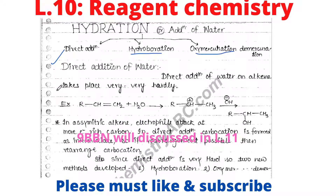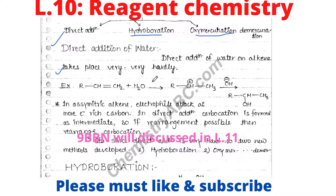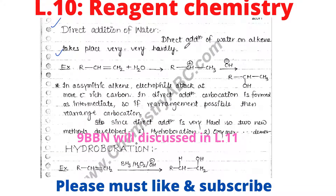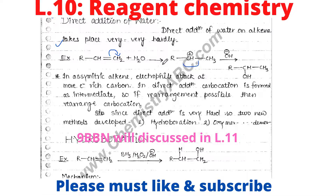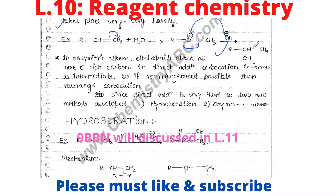Direct addition of water to an alkene takes place very, very rarely. This is CH double bond CH2. If you shift the electron density of the bond to this carbon, it is converted to a carbocation. H+ is formed and OH- attacks on this carbon, converting it to a secondary alcohol.